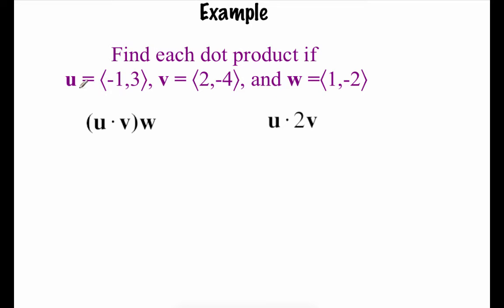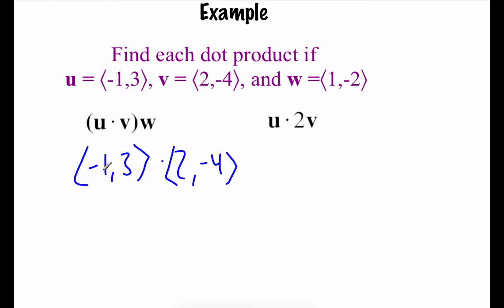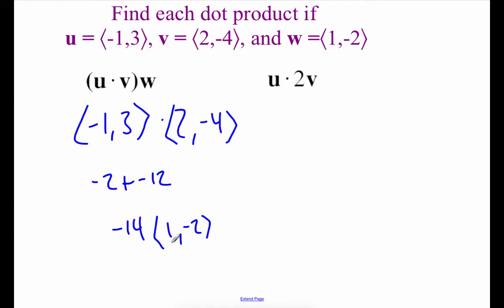A few more examples. Here we've got vector u = (-1, 3), v = (2, -4), and w = (1, -2). On the first one, we're going to do the dot product of u·v and then multiply that answer by w. Taking (-1)(2) + (3)(-4): -1 times 2 is -2, and 3 times -4 is -12, so we get -14. Then we multiply that scalar by vector w = (1, -2): -14 times 1 is -14, and -14 times -2 is 28. So our new vector answer is (-14, 28).